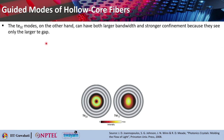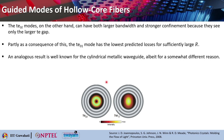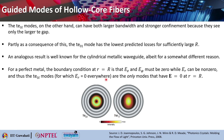The TE₀L mode on the other hand can have both larger bandwidth and stronger confinement, because it sees only the larger TE gap. As a consequence, the TE mode would have the lowest predicted loss for sufficiently large R — where R is basically the core radius. An analogous result is well known for the cylindrical metallic waveguide, although that comes from a very different reason.